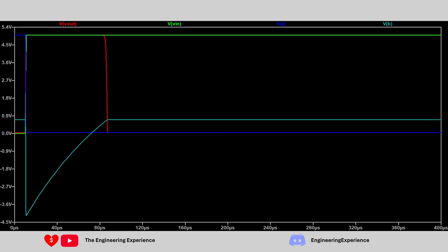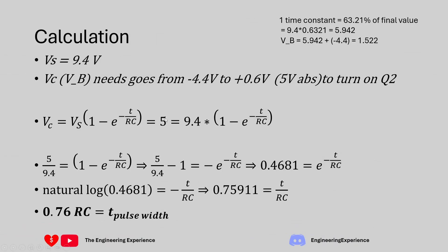So how do we calculate the pulse width, which the question asks us to show equals 0.76 × R3 × C1? We can remodel the circuit as a simple RC circuit with VS = 9.4 V, and we need the capacitor to charge up to 5 V absolute — equivalent to the base voltage going from minus 4.4 V to 0.6 V — in order for Q2 to turn on and Vout to go low.